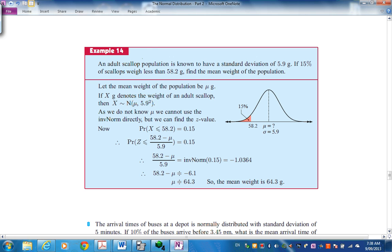An adult scallop population is known to have a standard deviation of 5.9. If 15% of scallops weigh less than 58.2, can you find the mean? That's interesting. You don't know the mean. Put everything on the diagram that you've been given. Is it possible to do this? Well, what we're going to do is convert to a Z-score. If we move this distribution back to a mean of 0 and a standard deviation of 1, we're looking at creating a Z-score or a position on the Z-distribution.